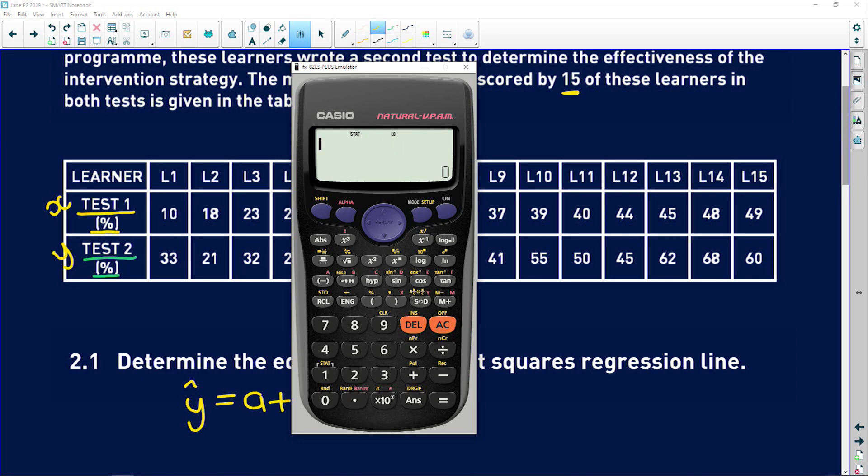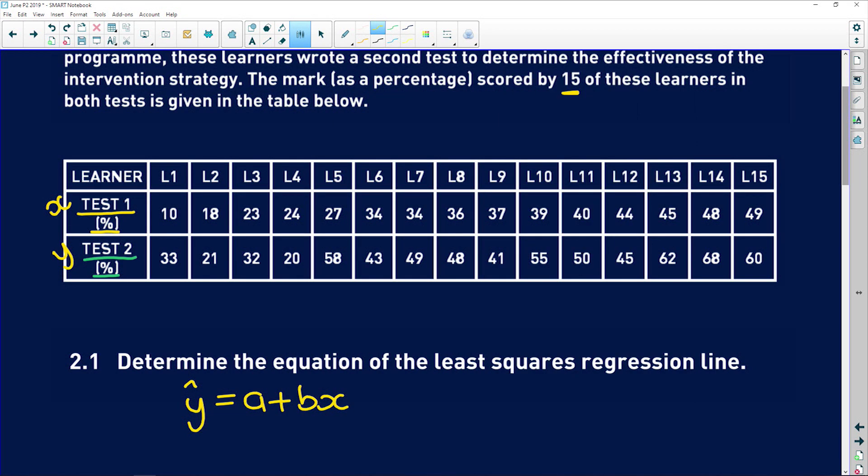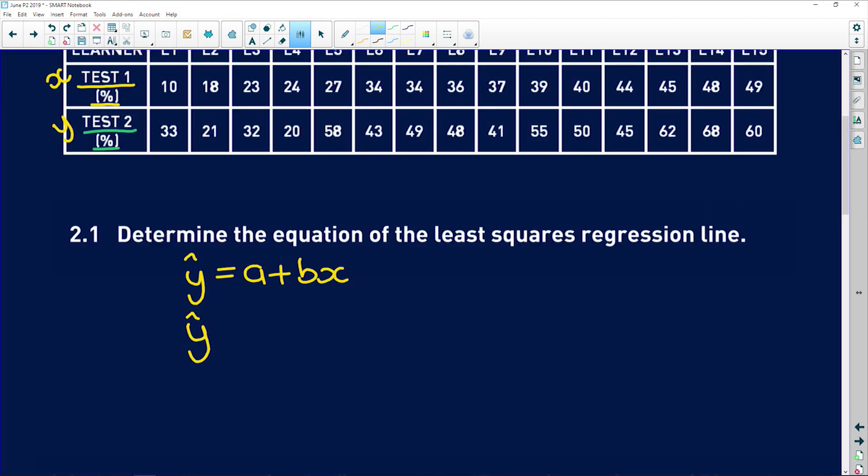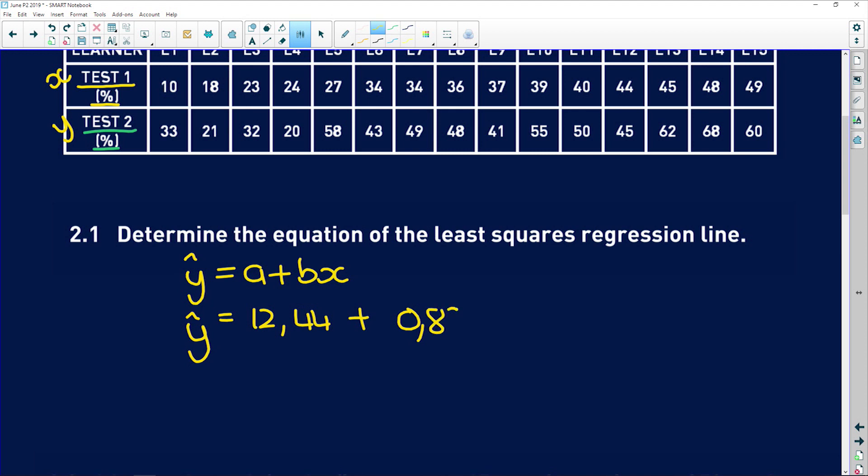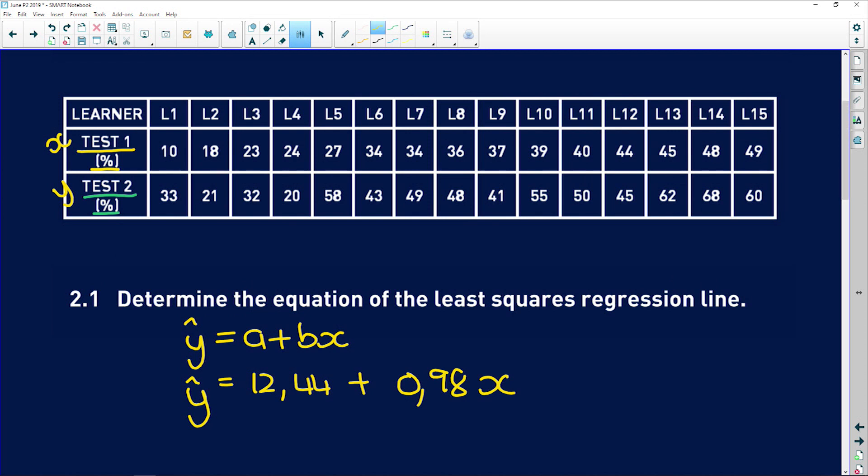So once you finish entering, you should have 15 numbers for each column. So now you press AC, which means you've stored those things in the calculator. You press shift, one for stats. Now we're dealing with some form of regression, so five for regression. And there you see you've got your A and B values. So I'm going to press one for A equals, and I get 12,44. So that means that the predicted y value is equal to 12,44 plus, go back to your calculator, shift, one for stats, five for regression, and two for B equals, and you get zero comma nine eight x. That basically shows the relationship between test one's marks and test two's marks.